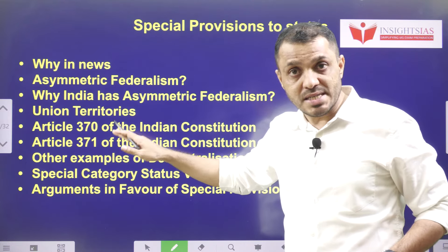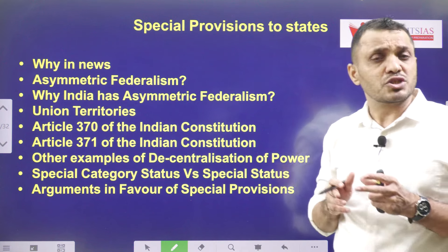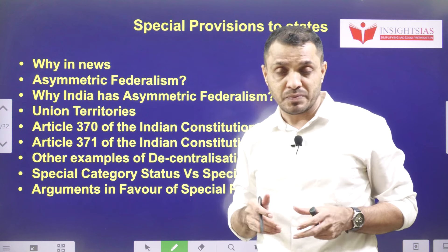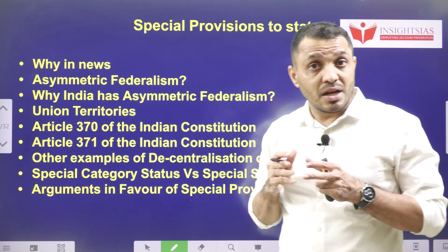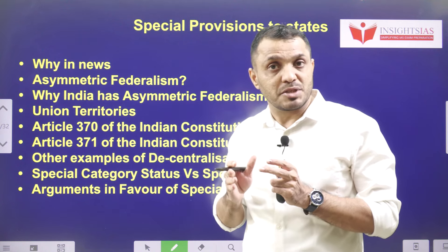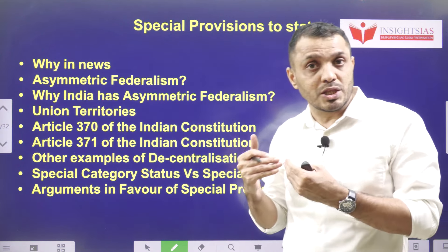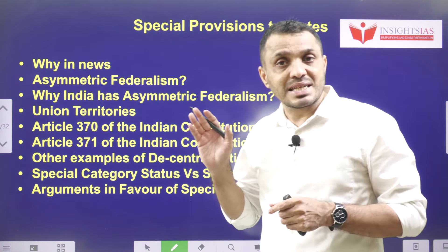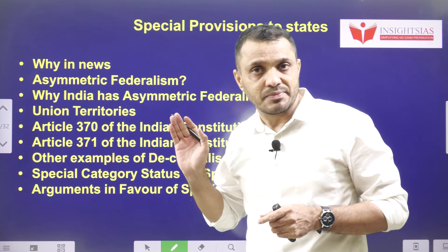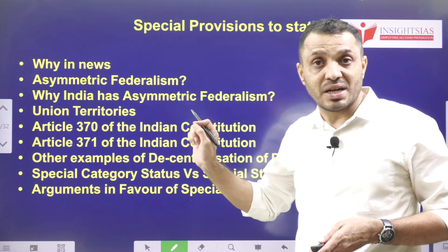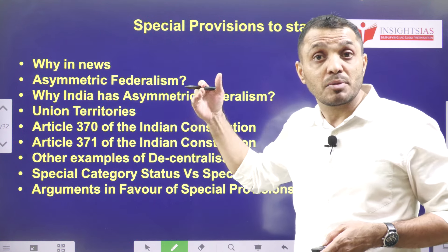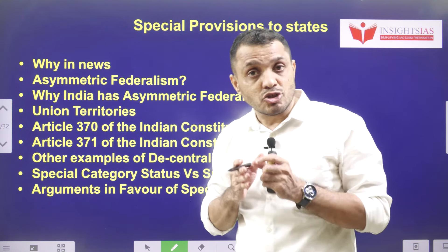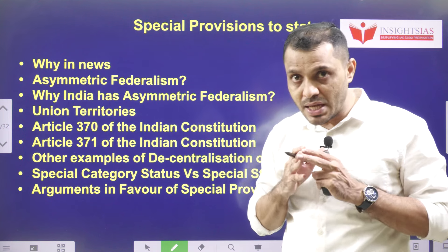Regarding the video components: first, we will discuss why asymmetric federalism is in news nowadays. The reason is, when Article 370 was subjected to judicial review, the Supreme Court made certain comments that Article 370 was not a part of India's sovereignty. It is just a feature of asymmetric federalism and it is a temporary provision, meaning it can be abrogated at any point of time. In that context, the Supreme Court specifically mentioned asymmetric federalism.